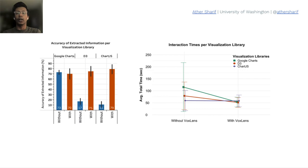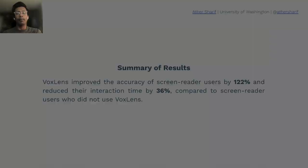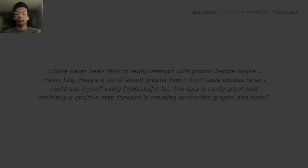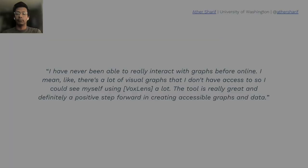Accuracy of extracted information is represented as percentages on the y-axis, and average interaction times in seconds are also on the y-axis. The x-axis shows screen reader users with and without VoxLens. Both accuracy and interaction times were significantly different between the two groups. VoxLens improved the accuracy of screen reader users by 122% and reduced their interaction time by 36%, simultaneously improving both metrics.